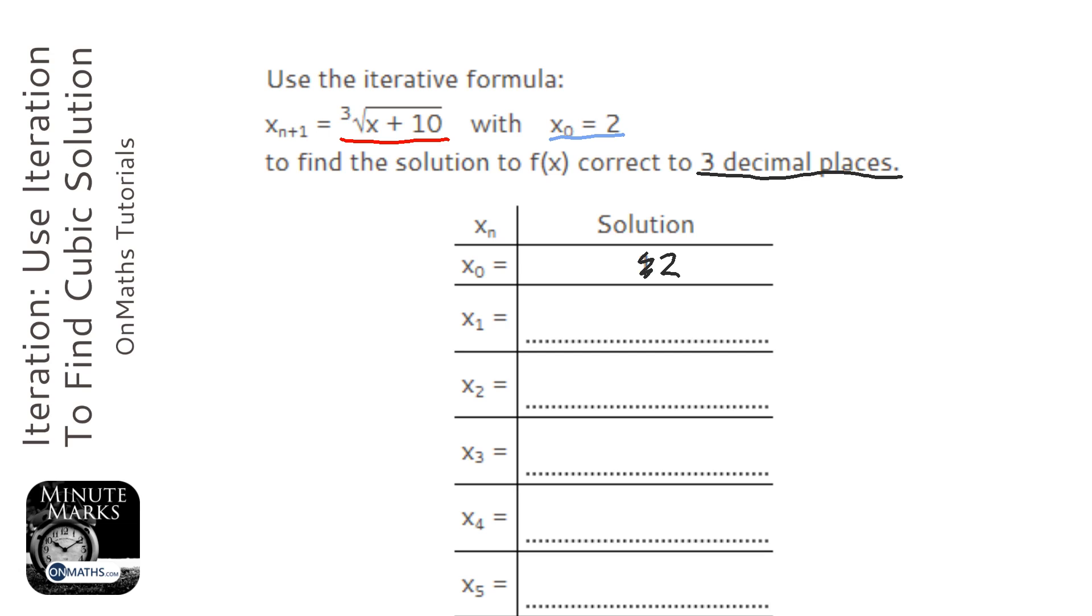The way to do this on a calculator is to type in the number you start with, which is 2, and just press equals. That will store the number into the calculator's memory. Next is to press the cube root button, which for me is shift and square root,